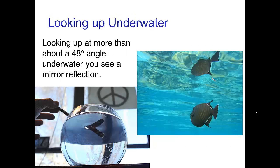One easy way of seeing total internal reflection is to look up at the surface of a water-air interface. Here I have a bowl and I dip a pencil in, and you can see the reflection of the pencil on the surface of the water. A similar photo shows a fish that is underwater — looking up, we see a reflection of the fish on the surface of the water. The surface of the water isn't perfectly smooth, so we see a little distortion, but otherwise it's a perfect mirror-like reflection.